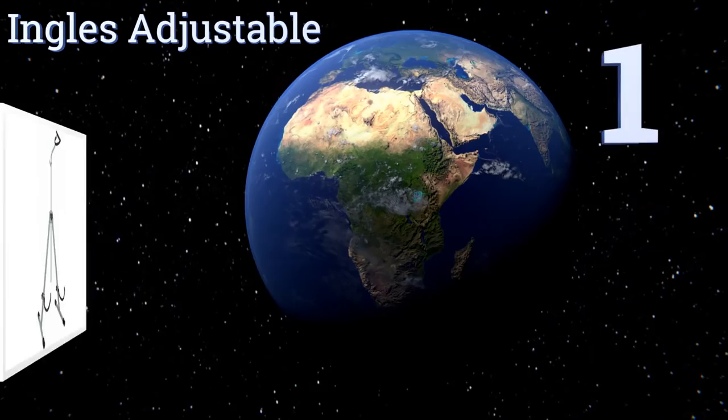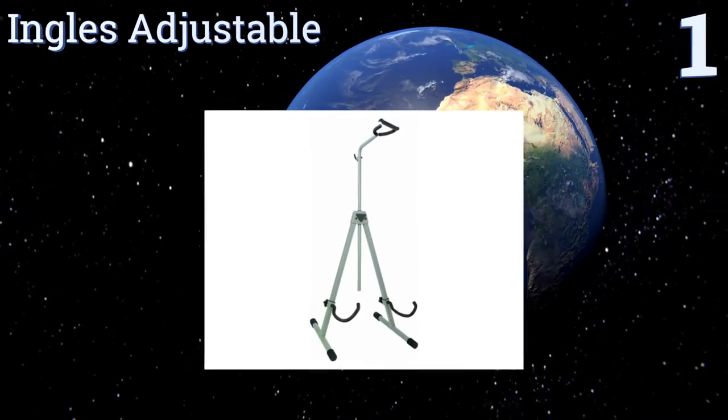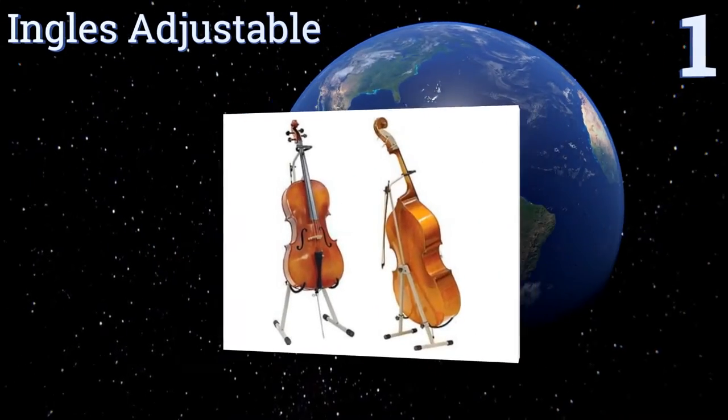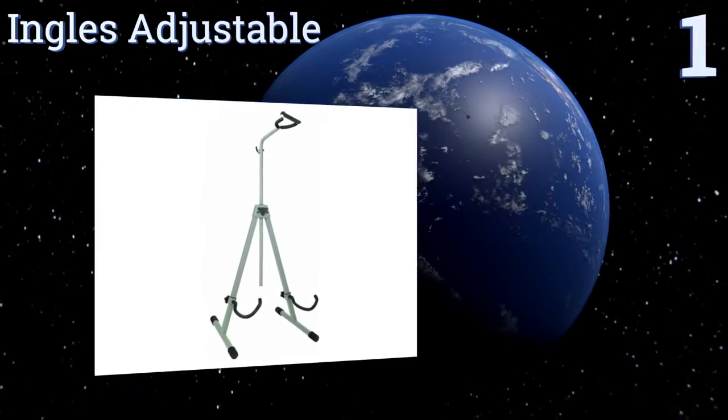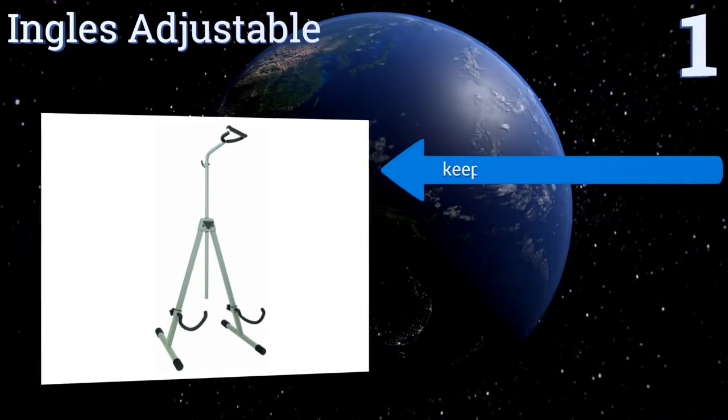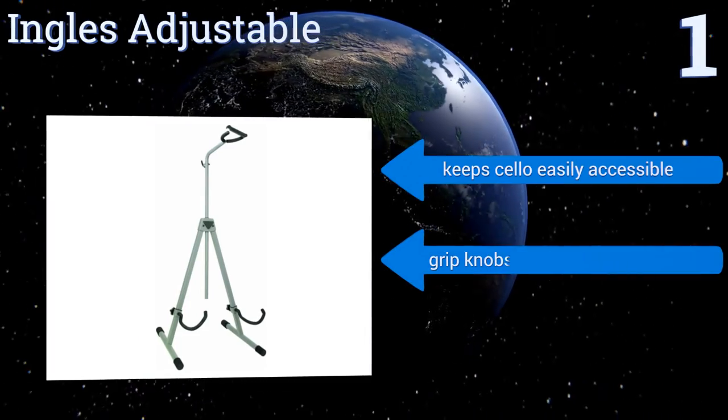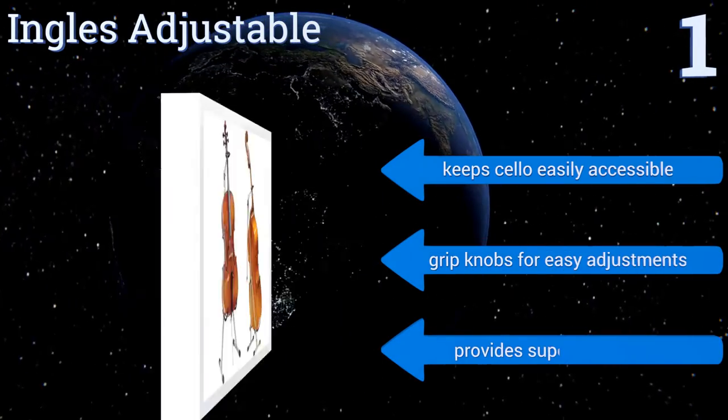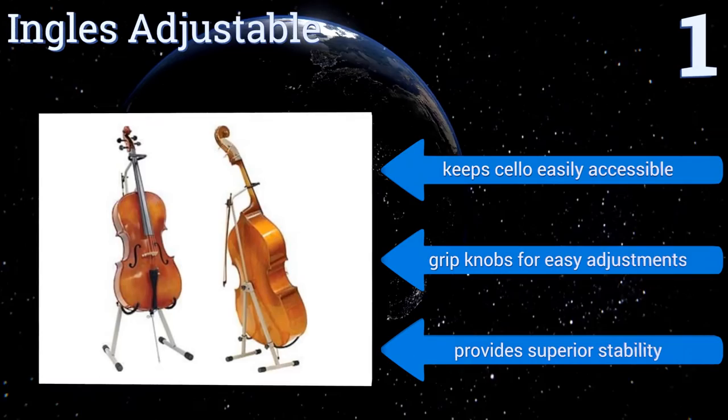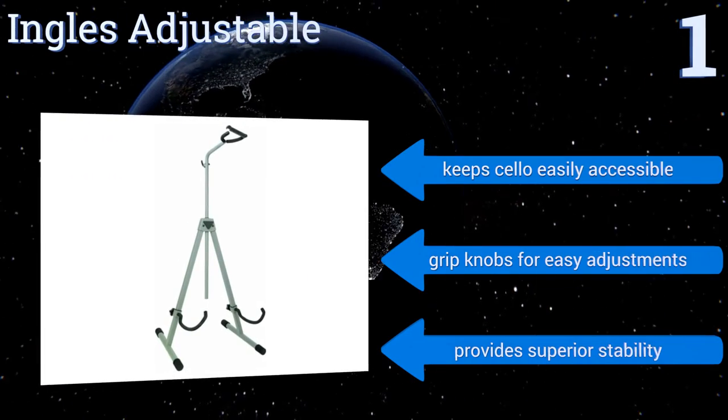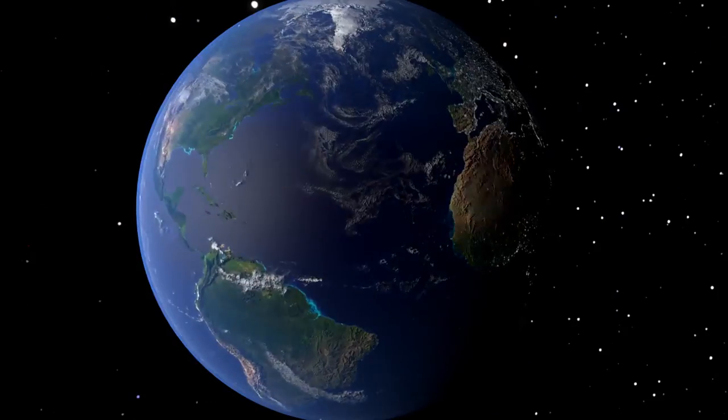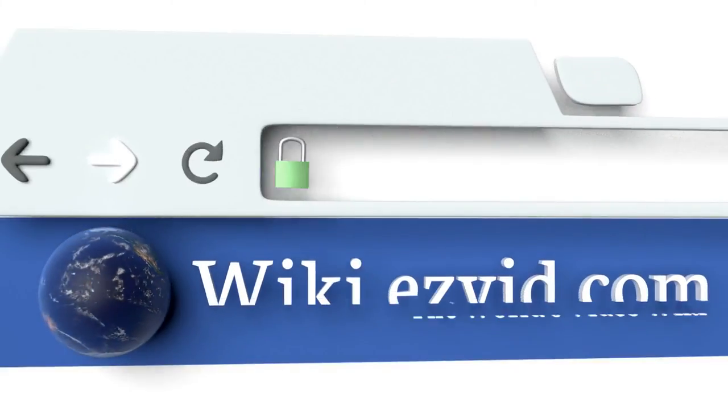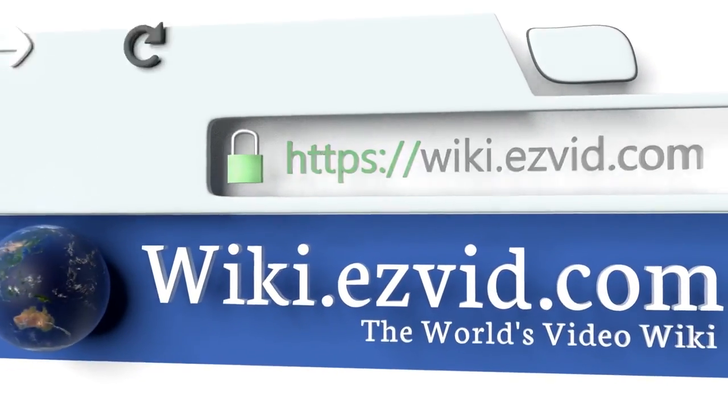And coming in at number one on our list, unlike a lot of models, the Ingles Adjustable is flexible enough to accommodate all cello and bass sizes and even provides enough room to leave your end pin extended. A very useful fold down safety bar locks your instrument securely in place. It keeps your cello easily accessible and comes with grip knobs for easy adjustments. It provides superior stability.